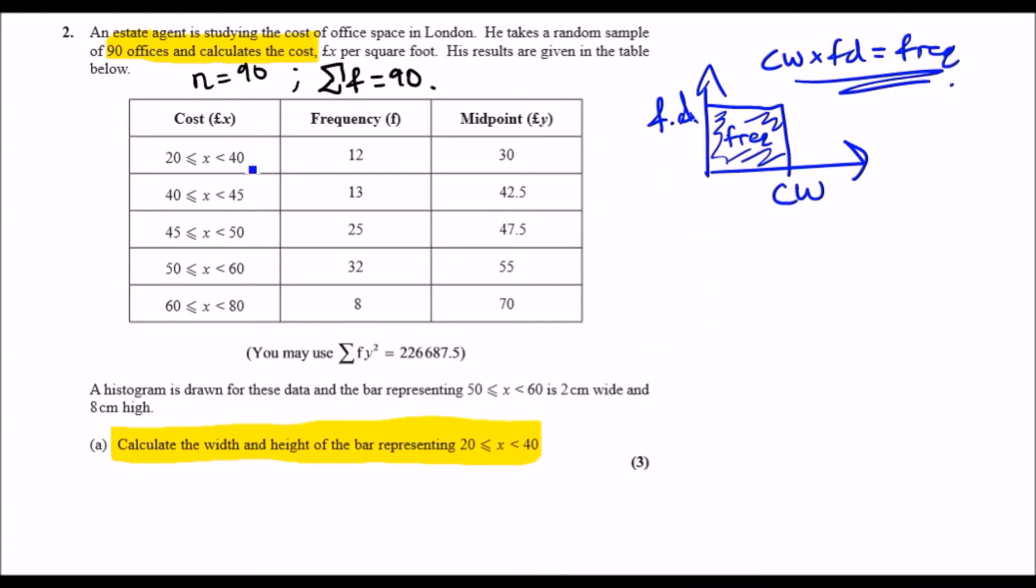Now, for example, if we look at the cost, let's go ahead and evaluate the class widths here. What do we have? So we have a class width of 20. Here we have a class width of 5. So just find the differences. 5, 10, got my 5, and 20.